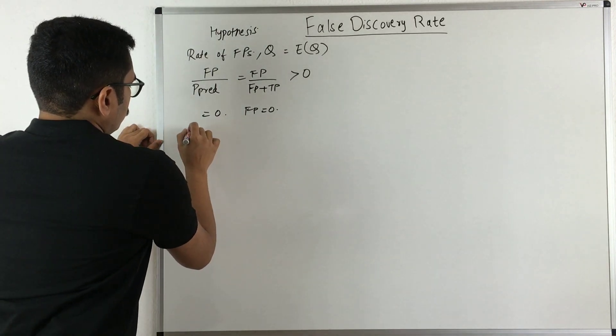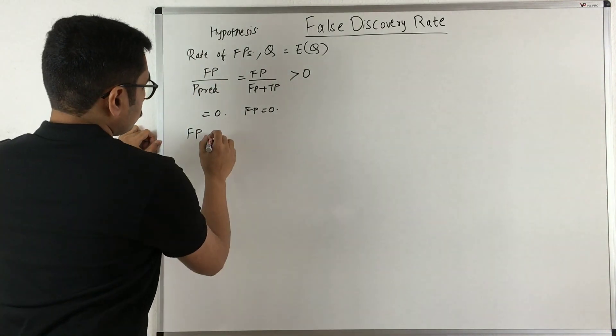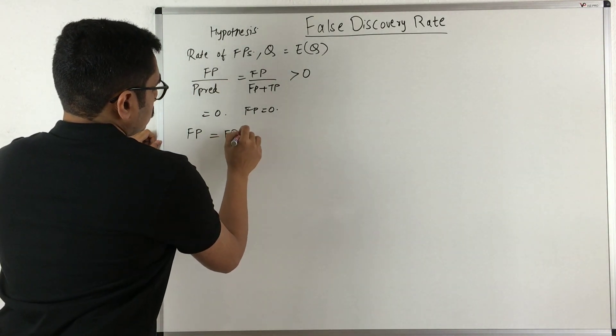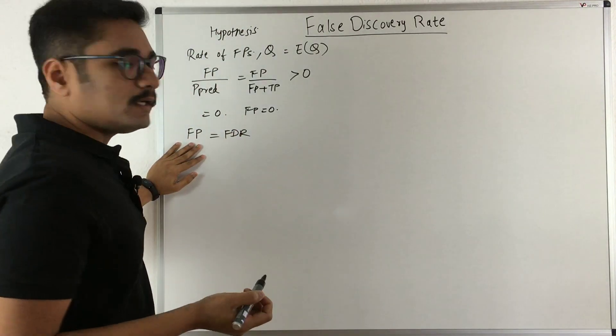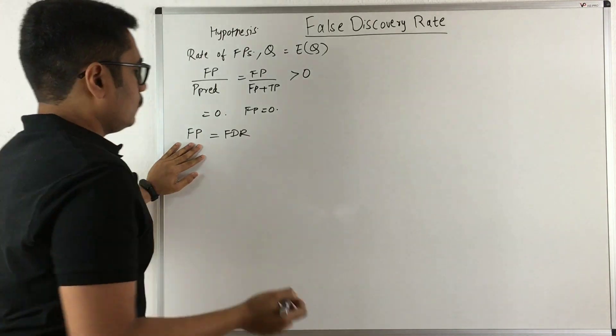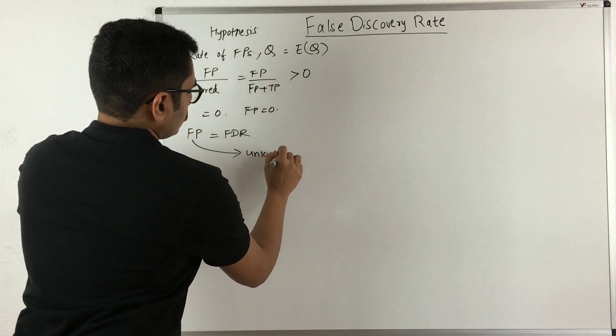Usually if you can identify false positives from your results, you can calculate the FDR. But in most cases or in most tests, the false positives are unknown.